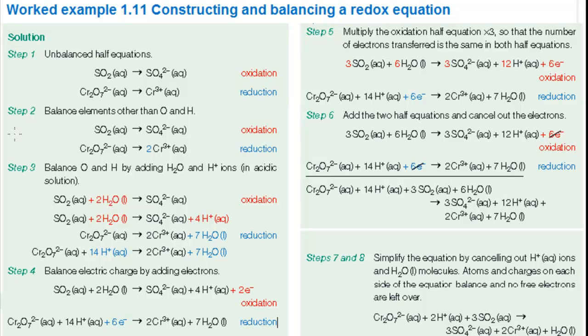Let's work through these steps for the reaction of sulfur dioxide and dichromate ions. The first step is to write down the species in the two half equations. Don't worry about balancing at this stage. SO2 is converted to sulfate ions in an oxidation reaction and dichromate ions are converted to chromium 3 plus ions in a reduction reaction.